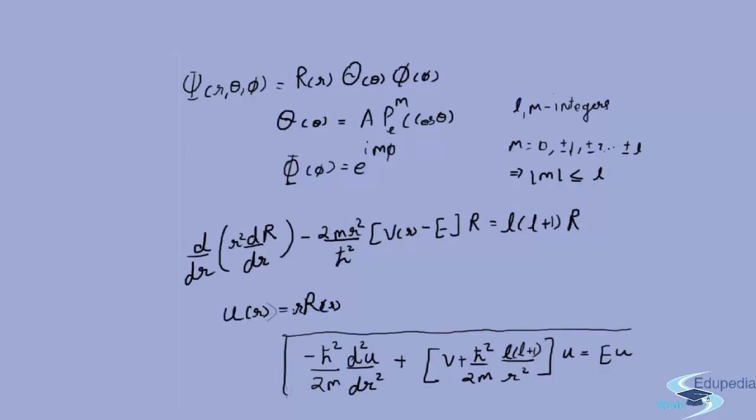Here's something interesting: the potential V has been replaced by V plus h squared by 2m L times L plus 1 by R squared. This extra term is basically increasing V outside by a particular value depending on the radius. It is what is called a centrifugal term because it tends to send the particle away from the origin. This centrifugal term tends to throw the particle away and is responsible for some interesting effects.